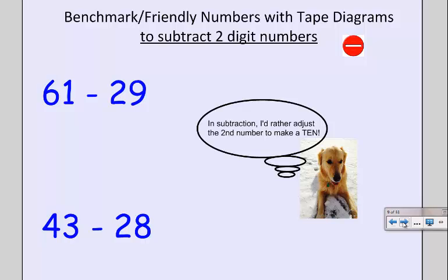We can do this same idea with subtraction. But in this case, we're going to adjust the second number to make a 10. It's not as great with the tape diagram here, but we can still use this same strategy. We're going to compensate. So instead of doing one tape diagram, I'm going to end up doing two.